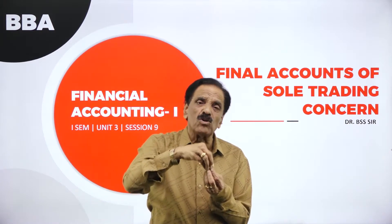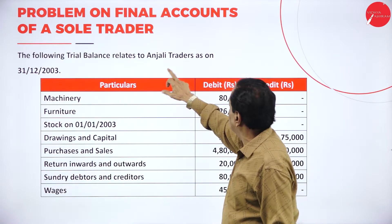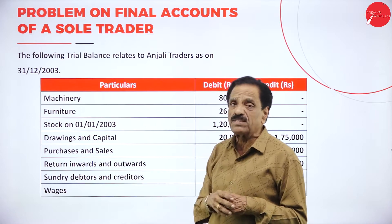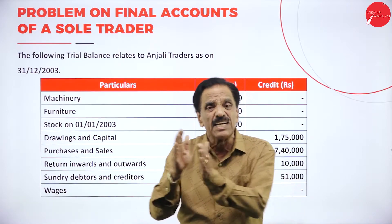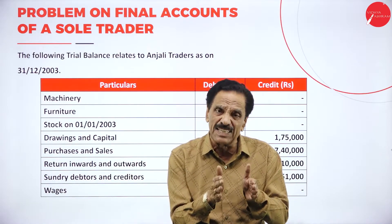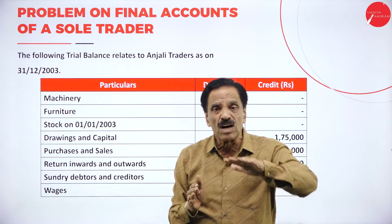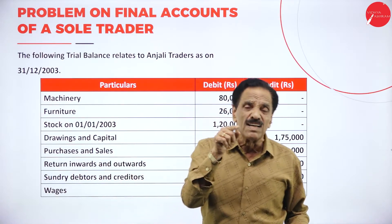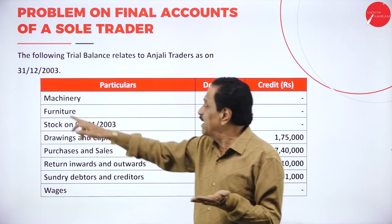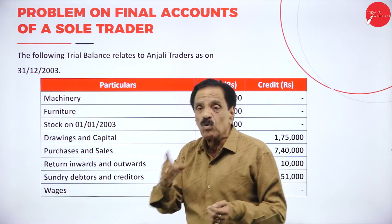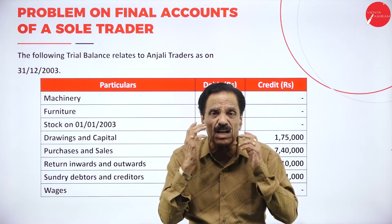We will move on to the problem. The following trial balance relates to Anjali Traders as on 31st December 2003. The closing date is 31st December 2003 — start with January, end with December, which is called calendar year. If we start with April, end with March, that is called the financial year. Here it closes on 31st December 2003, meaning 1-1-2003 to 31st December 2003, a duration of 12 months.